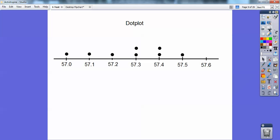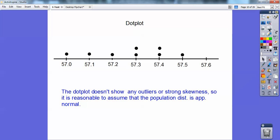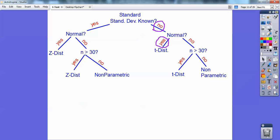There's a dot plot of the data, and the AP test readers would like you to show that, so create a dot plot. I don't see any non-normality happening in there, no strong skewness, and there's no outliers. I can assume that the population distribution is normal, just from that sample size of 8 and the dot plot. So I can go ahead and do a t-distribution.